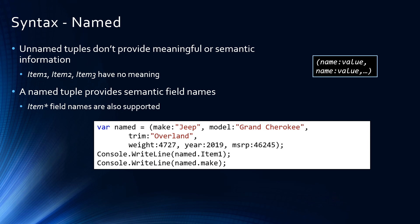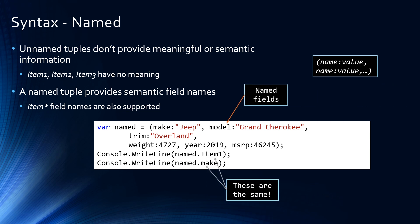So the example we have here, we've now created a make, model, trim package, the gross weight, the MSRP, the year, etc. Before, those fields were not really clear what they were. However, we can access the fields using either the item-star field names — the built-in field names — or we can access them using the named field names like make, model, etc.